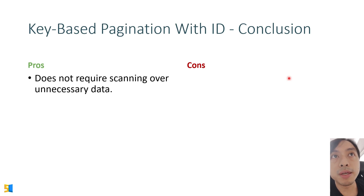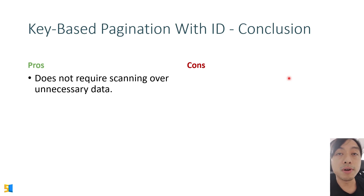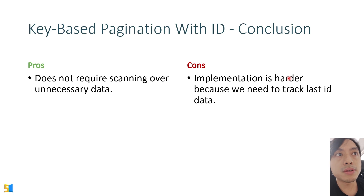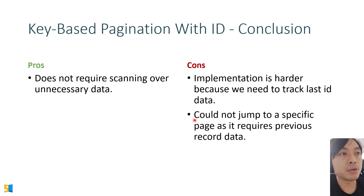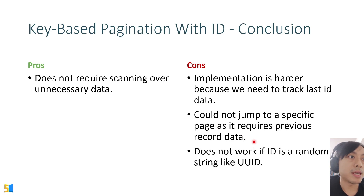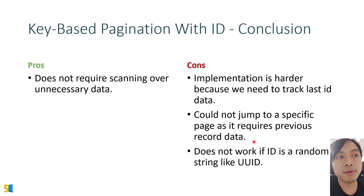The pros of key-based pagination with ID are that it doesn't require scanning over unnecessary data, so performance is better. The cons are that implementation is harder because we need to track the last ID, we cannot jump to a specific page as it requires previous record data, and it does not work if your ID is a random string like UUID.